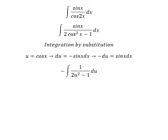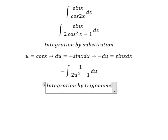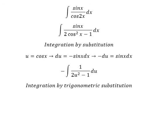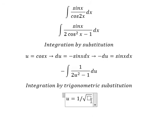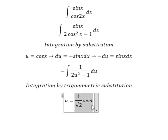Next we need to use integration by trigonometric substitution. So I will put u equals to one over the square root of two, times secant of t. If we put this in here, we have one over two secant squared of t. We simplify: secant squared t minus one we change for tan squared t, and later we simplify by du.